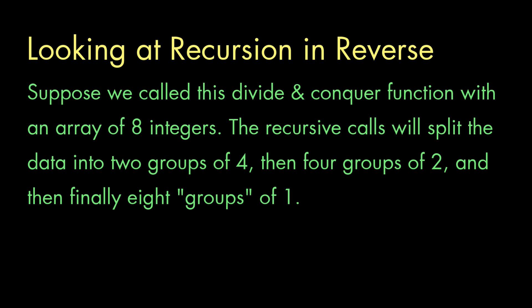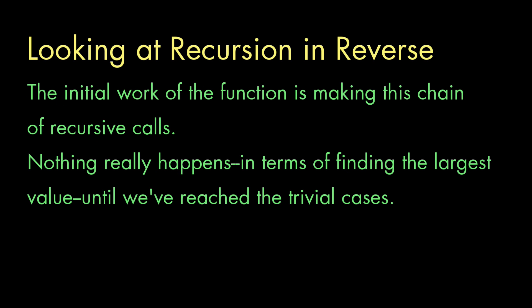Now suppose we call this function with an array of eight integers. Well, the first thing this function is going to do is generate two recursive calls. And each of those will generate two more. And each of those will generate two more as well. So the first phase of this function's work is just generating all those recursive calls. Just getting to the point where the calls are being made on individual items in the array. The function isn't really accomplishing anything until those calls on the single items return, and it can start actually comparing values. Everything up to that point is just throat clearing.